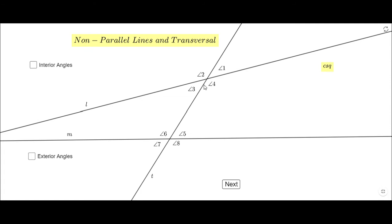You can see the angles: one, two, three, four, five, six, seven, eight. The first thing I want you to see is the interior angles. In this case the interior angles are angles three, four, five, and six. We call them interior because they are between lines L and M — they are inside.